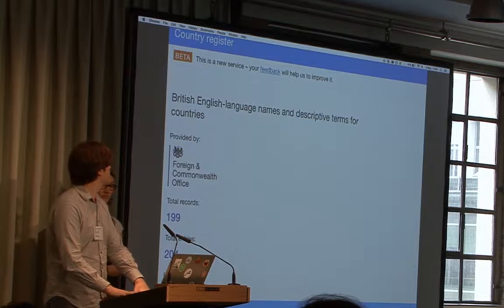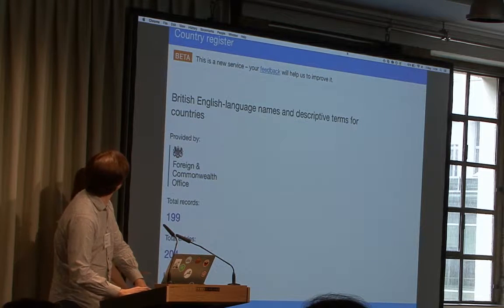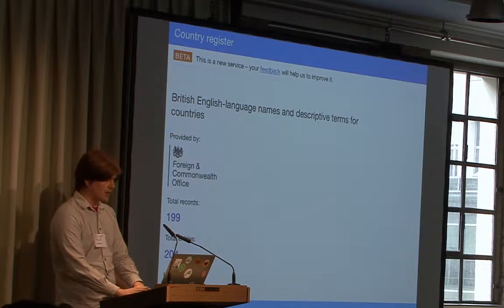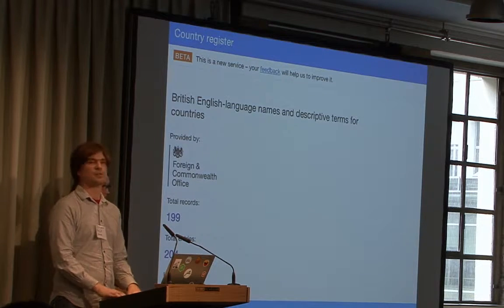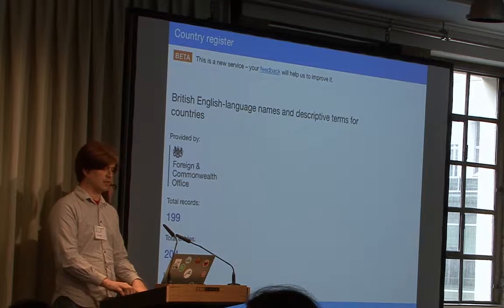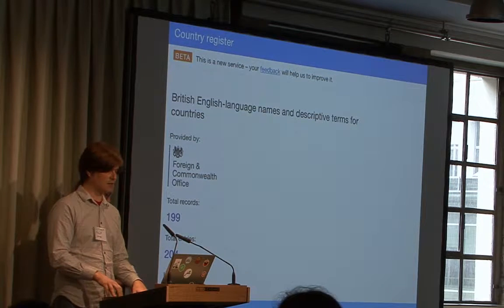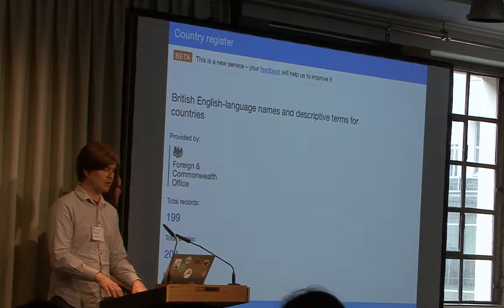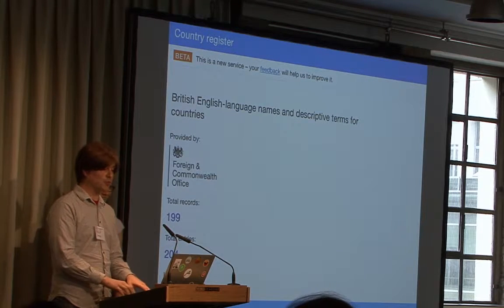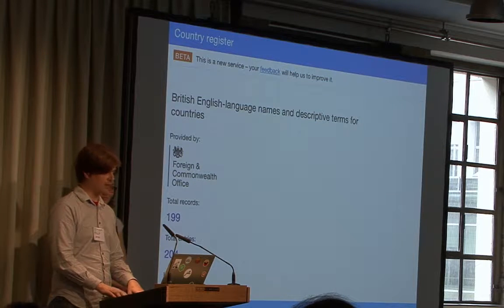This is what we've built — this is the new country register. It's curated by the FCO. It says right there: provided by the Foreign and Commonwealth Office. This is the list of countries according to the UK. There is no other list now. This is the canonical one. You always know you've got the latest information, and I'll show you why that is in a moment. This is what registers do.